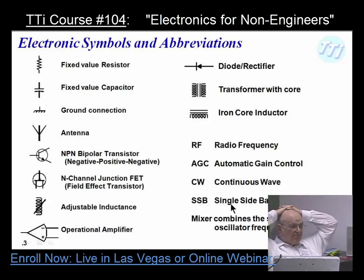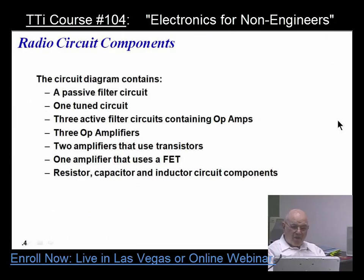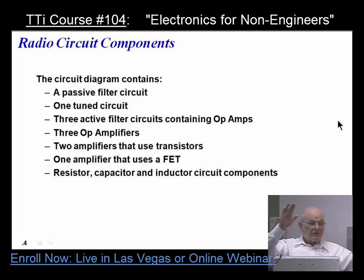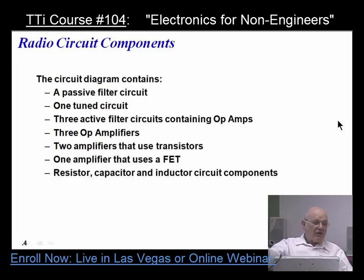Remember, you actually mix signals together and get the sum and the difference — those are the sidebands. You can grab one of them, making a single sideband. Now, radio circuit components: it has a passive filter. What makes a passive filter? Passive components — resistors, capacitors, and inductors. It has one tuned circuit. Why do you need a tuned circuit? You have several frequencies available and you want to tune into one — the tuned circuit grabs the one that's the carrier frequency.